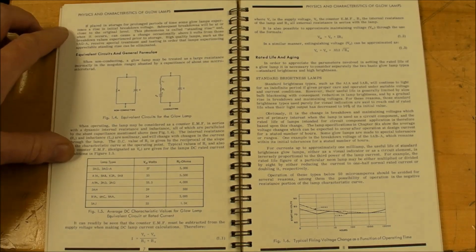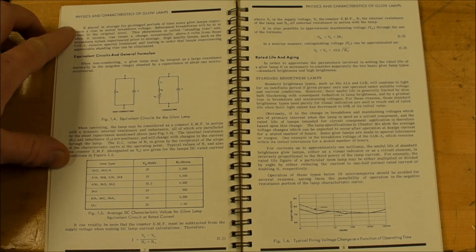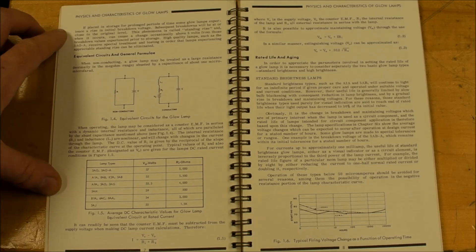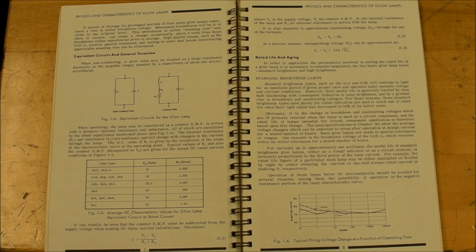They say that if placed in storage for prolonged periods of time, some glow lamps experience a rise in initial breakdown voltage. Subsequent breakdowns may be at or close to the original level.